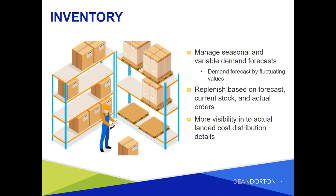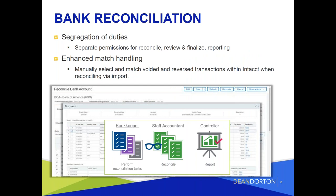Bank rec is another big deal. In R1 they delivered a lot of great new functionality, and in R2 they've done it again. We now have the capability to do segregation of duties - it separates permissions for key functions of the bank rec so that one person can reconcile, another can review and finalize, and another can view the report. Previously there was no way to separate all those different duties - if you had permission to do the reconciliation, you essentially had permission to do it all. Additionally, enhanced match handling lets you manually select and match voided and reversed transactions within Intacct when reconciling via import, which previously required a separate second step.